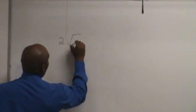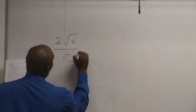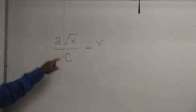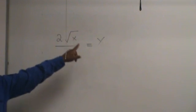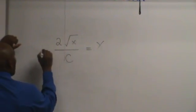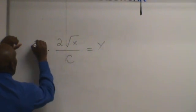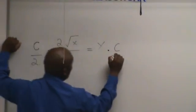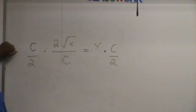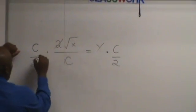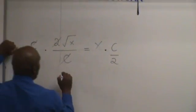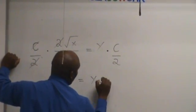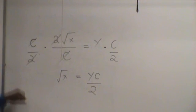Two square root of x over c equals y. We're going to have to get rid of that c and that 2 and the square root. Multiply both sides by c. Divide by 2. Let's do that first. That cancel that. That cancel that. That cancel that. Square root of x equals yc over 2.